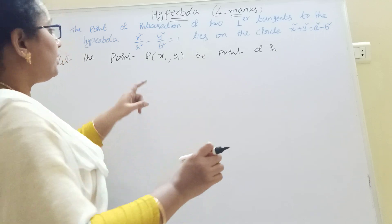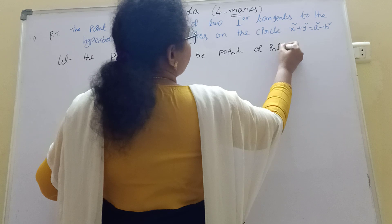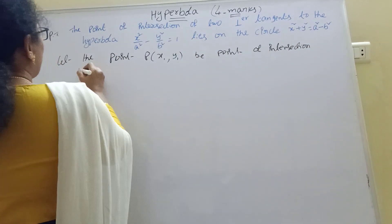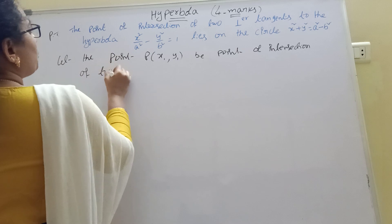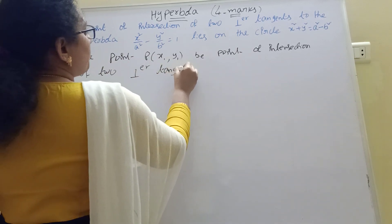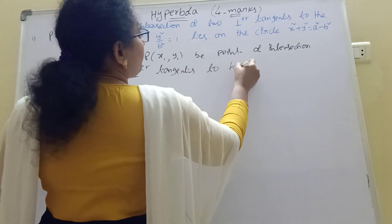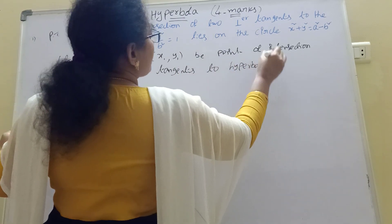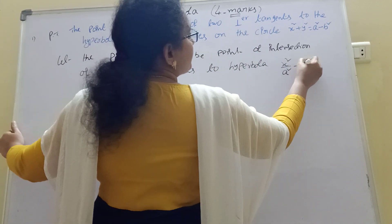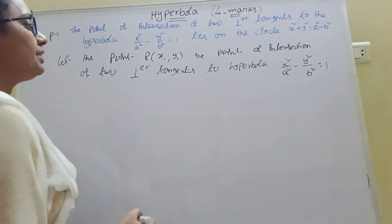The point of intersection of two perpendicular tangents to the hyperbola x² / a² minus y² / b² equal to 1. Okay.